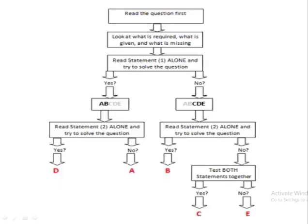So we can use this flowchart when solving data sufficiency problems. The first step is to read the question. Before anything else, we should read the question. Next, look at what's required, what's given, and what's missing. Then read statement 1 alone and try to solve the problem. If you are able to solve it, the answer choices are either A or D. If you are not able to solve it using statement 1, the answer choices left are C, B, or E.